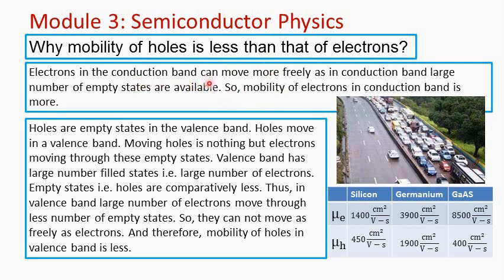Electrons are moving in the conduction band. What is the conduction band? It is the lowest empty energy band. So the conduction band has a large number of empty states, and some electrons get excited from the valence band to the conduction band. So electrons can move freely through those empty states which are available.